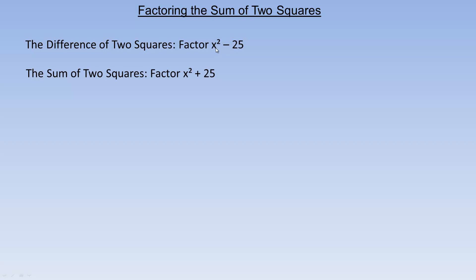Let's say you're asked to factor x squared minus 25. It's the difference — difference being there's a subtraction sign between that term and that term. x squared is a perfect square because it's x squared, and 25 is a perfect square because it's 5 squared, and that factors into x plus 5 and x minus 5. You can always check any factoring, and I'll do that here — if we were to expand this out, we can demonstrate that it does give you x squared minus 25.